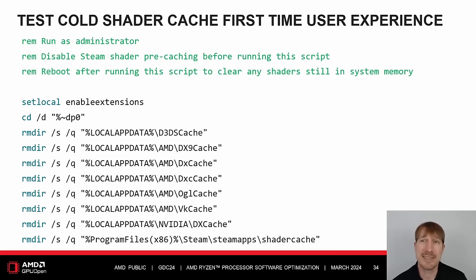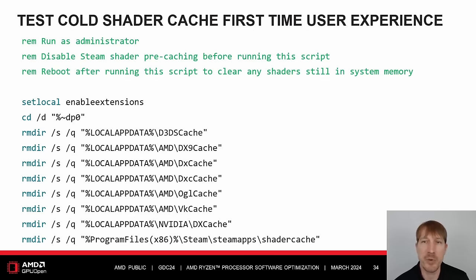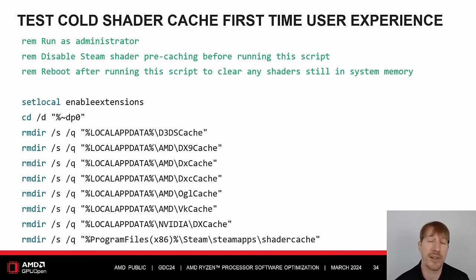It is important to test the cold shader cache first-time user experience. If the application has a shader cache, make sure to clear it. Remember that the end user might not run the same scene repeatedly as developers do during debugging. The example provided clears the shader caches for Microsoft, AMD, and NVIDIA. After running the script, it is recommended to reboot the system to ensure that any remaining shaders are cleared from memory. Keep in mind that applications and games can have different configurations of shader caches on disk, and the GPU vendor and driver versions can also affect the outcomes.